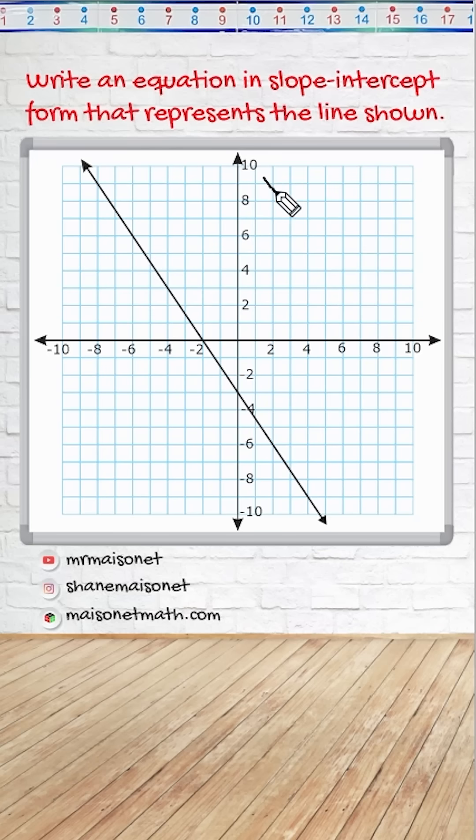Now remember, slope-intercept form is y equals mx plus b. The m variable in our formula represents the slope of our line, and b represents where our line crosses the y-axis. That's why we call b the y-intercept.